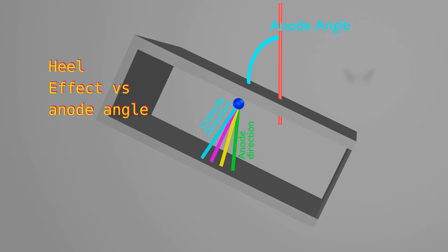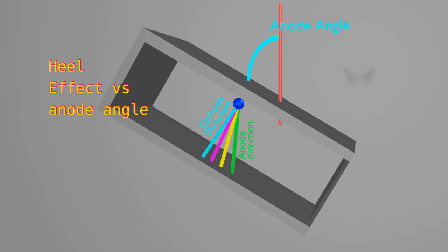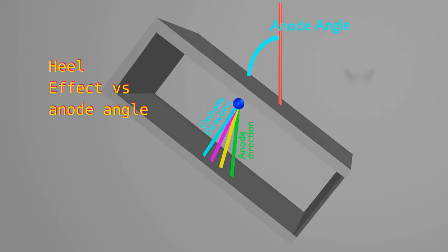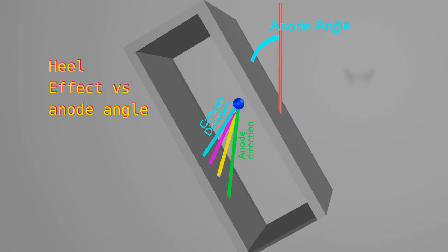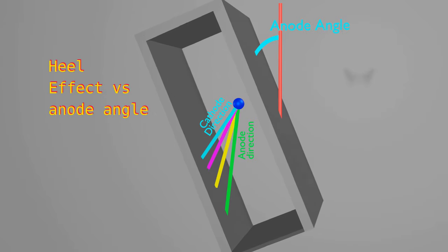Line focus principle advocates for lower anode angle to reduce geometrical unsharpness. So, reducing anode angle as per line focus principle causes heel effect.